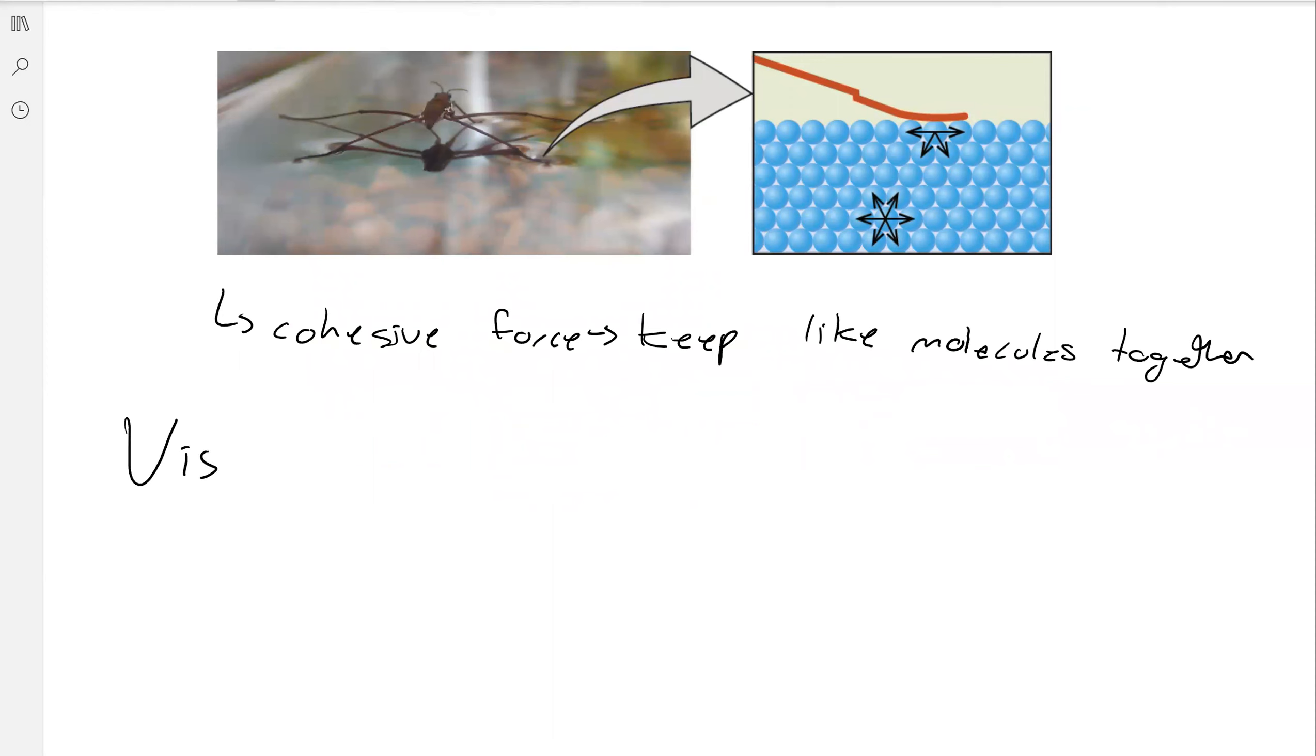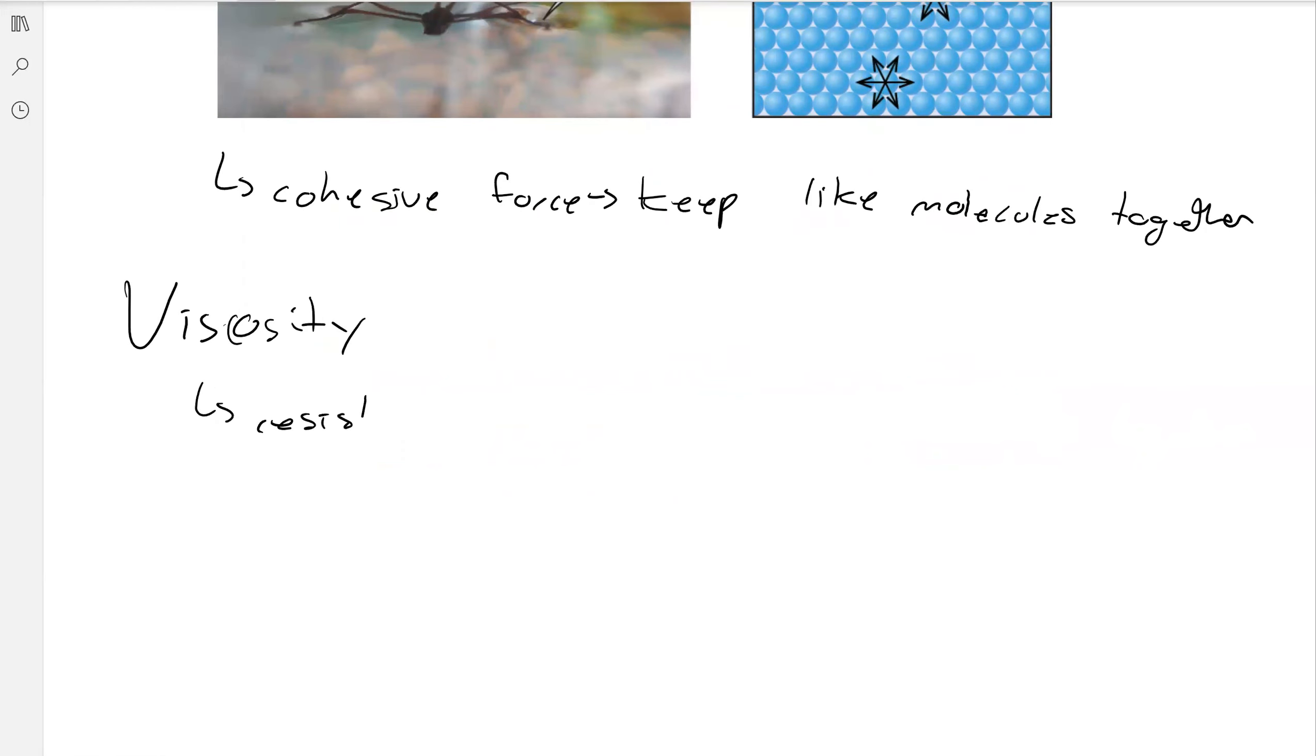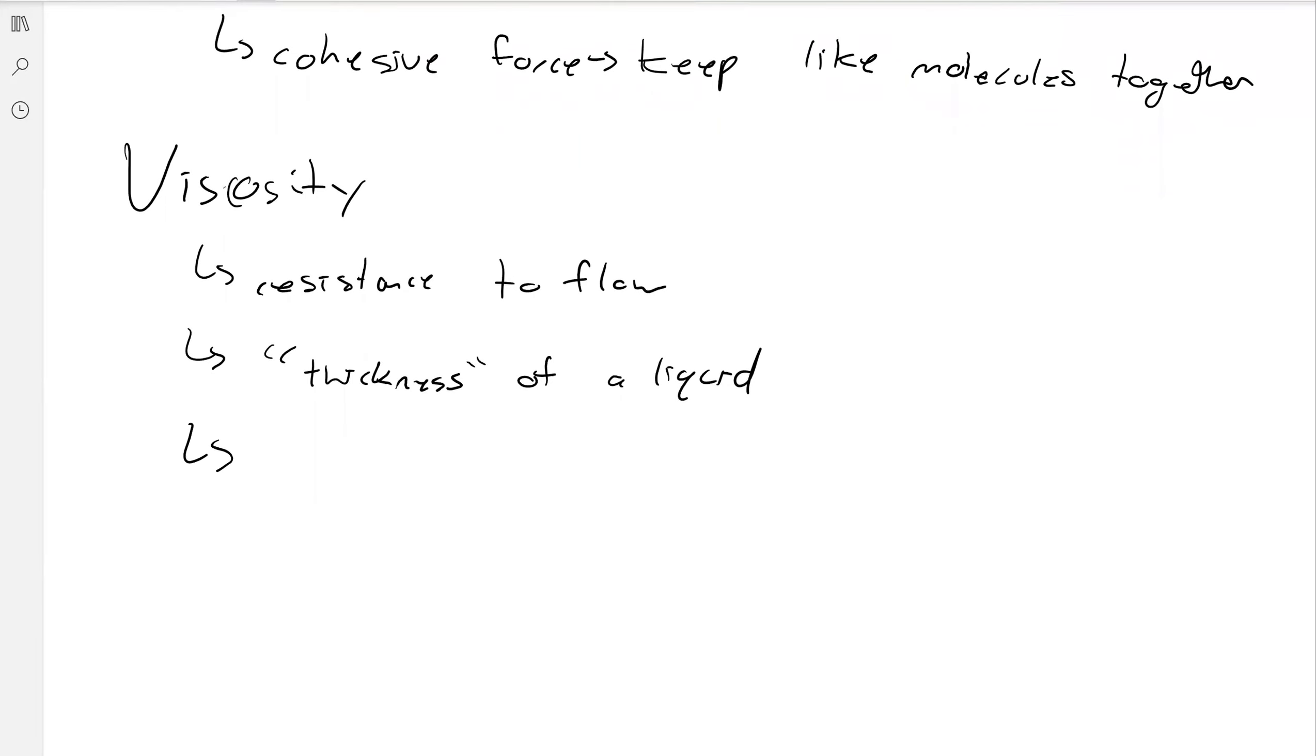Another example of this is viscosity. Viscosity is the resistance to flow. It's kind of like the thickness of a liquid. So something like honey is a very viscous liquid; it sticks to one another, it doesn't flow very quickly, that kind of thing. And then of course, the more or stronger intermolecular forces that you have, the more viscous your compound is.